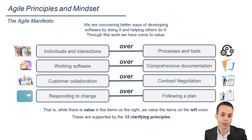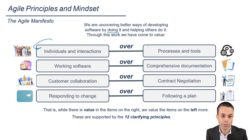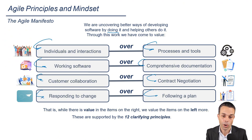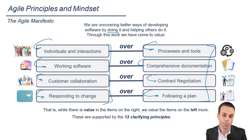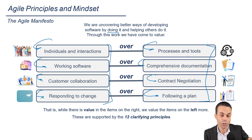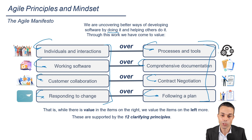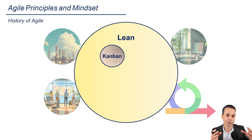The Agile Manifesto says — and we're going to see how all of these things actually work in practice and how they interact with each other. The main idea is that we're seeing real things and working face-to-face and communicating quickly, rather than using emails or documentation or doing showcases or reports. And that becomes a very powerful way to work. So while there's value in items on the right, we value the items on the left more. And these are supported by the 12 clarifying principles, which we'll show all the way at the end to tie everything together.